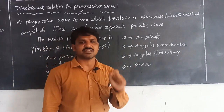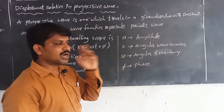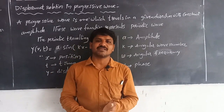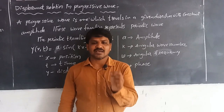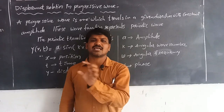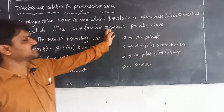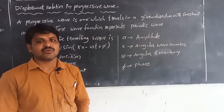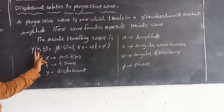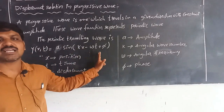A periodic wave means that at any instant of time or at any position, the particles vibrate with constant amplitude and repeat themselves at the same constant distances. The displacement relation for a periodic traveling wave can be written as: y(x, t) = A sin(kx − ωt + φ).